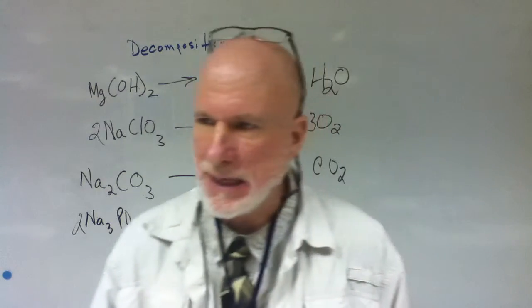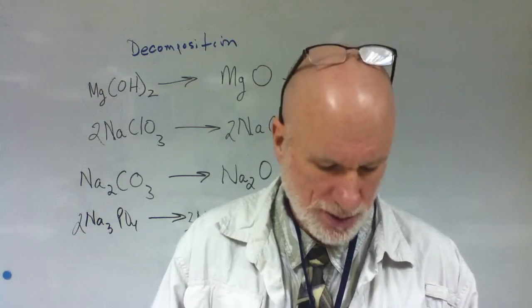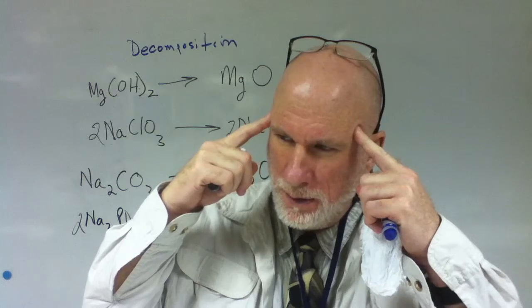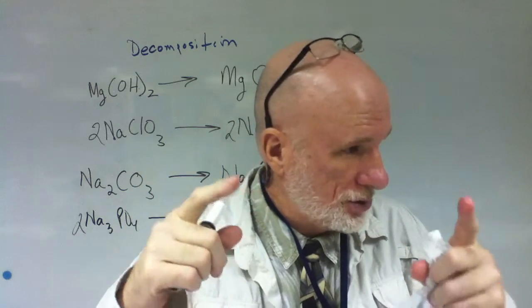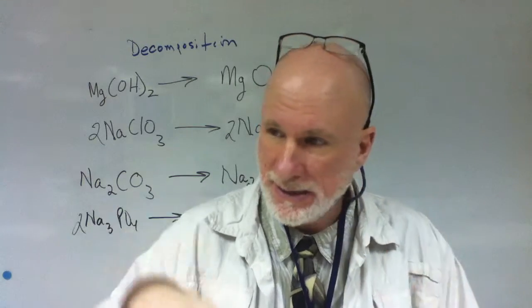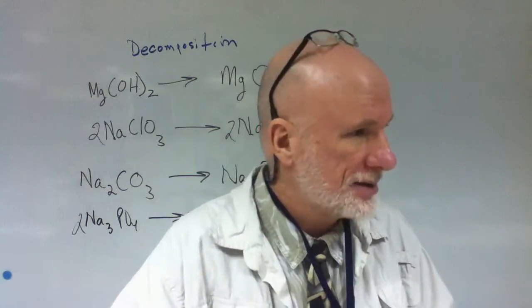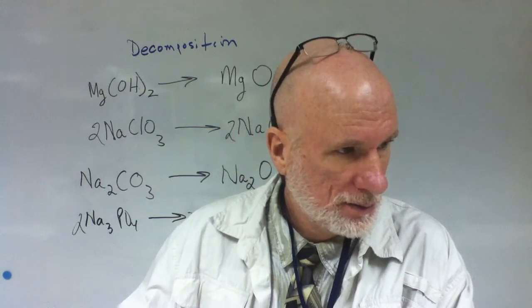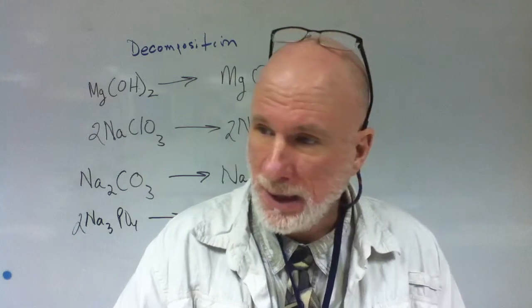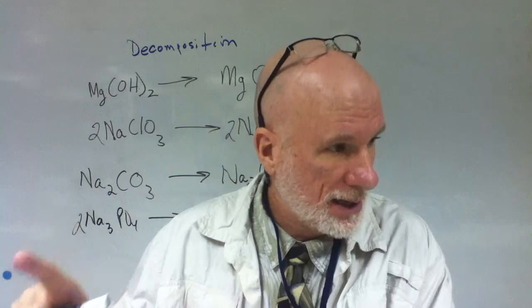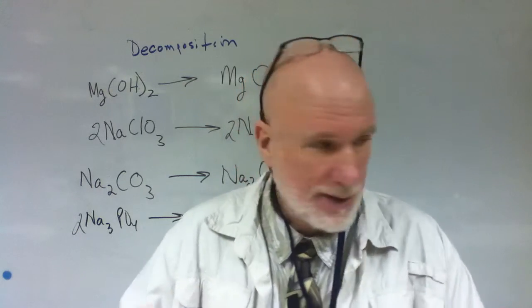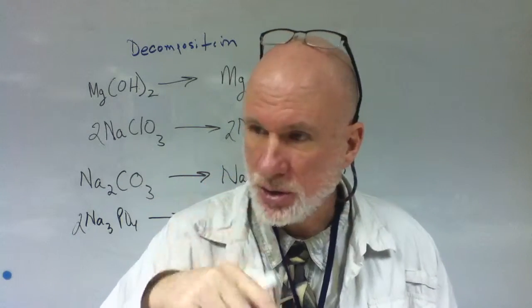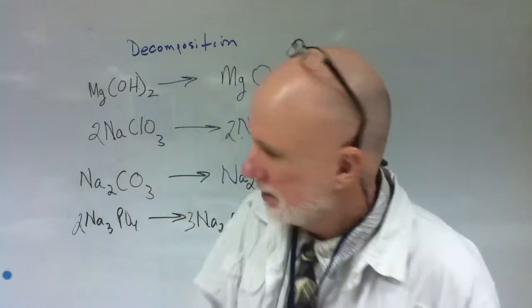So the last type, Ava, are you with us? So what are the six that we did? A salt to its individual elements, an acid to acid anhydride and water, a base to base anhydride and water, a chlorate to salt and to chloride and oxygen, a carbonate to carbon dioxide and the corresponding oxide, and just now we did salt to a base anhydride and acid anhydride.